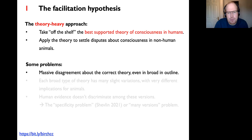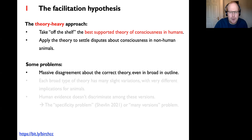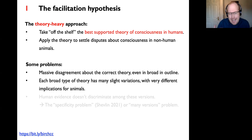This approach faces serious problems. One very obvious problem is the current state of human consciousness science, where there's massive disagreement about the correct theory even in broad outline. Higher order theories don't have a great deal in common with Integrated Information Theory; Global Workspace Theory is something different again; there's Merker's midbrain theory as another quite distinctive take. One can multiply very different theories for a long time.